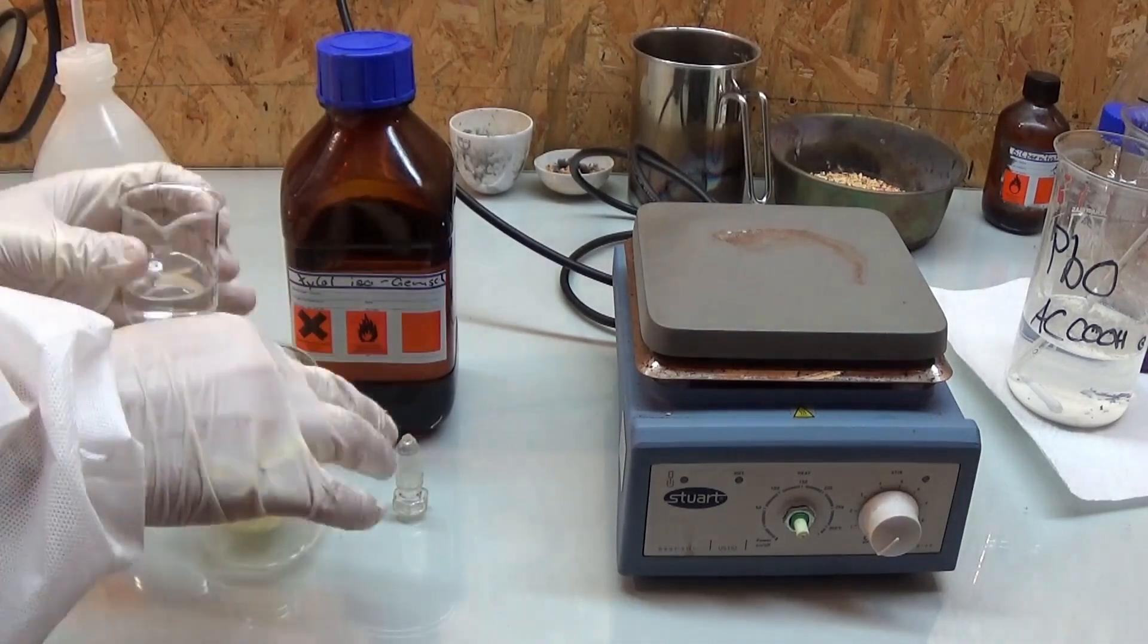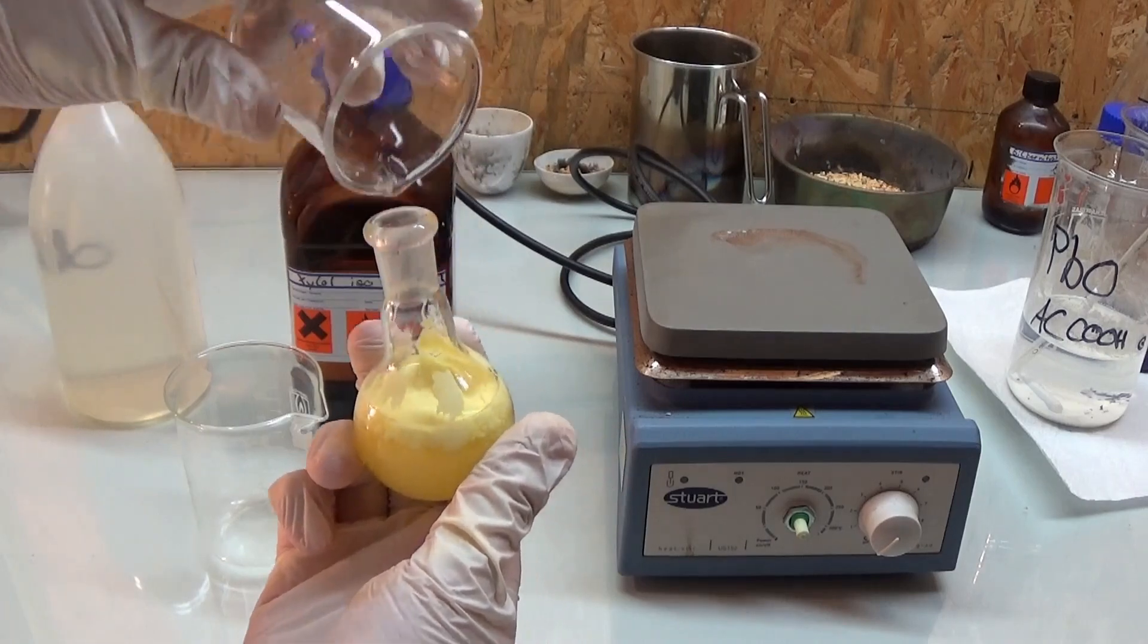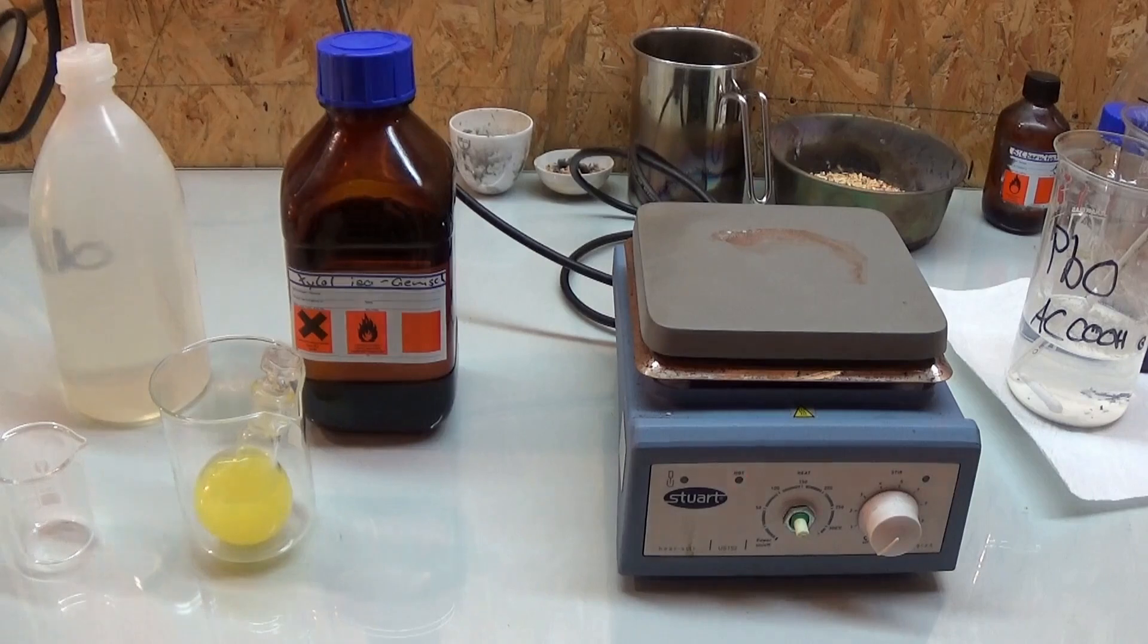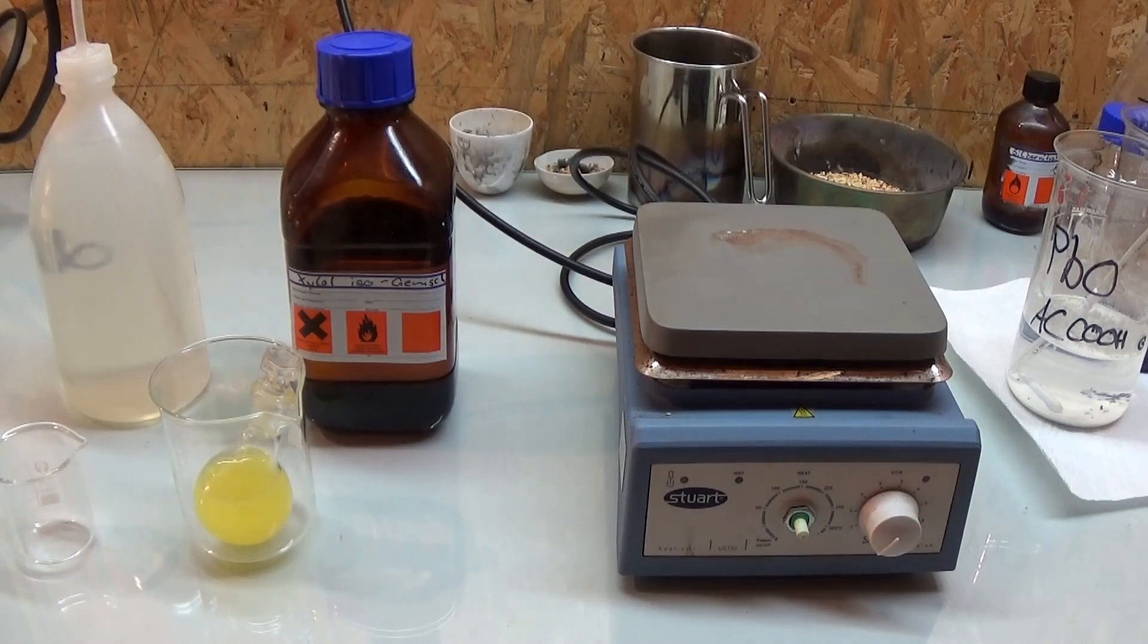To work up the reaction mixture we add some water to dissolve all polar hydrocarbons and the sodium hydroxide. This mixture is then extracted using 25 milliliters of xylene. This extraction is performed twice.